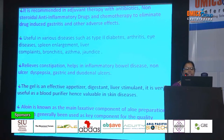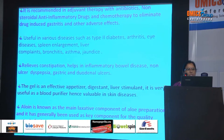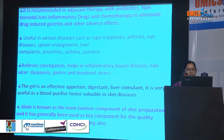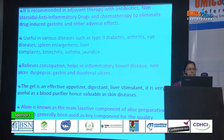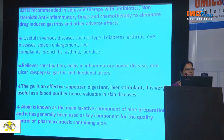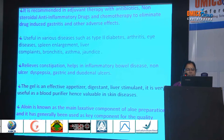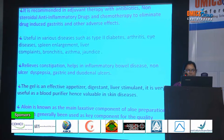Aloe is useful in various diseases such as type 2 diabetes, arthritis, iron deficiency diseases, spleen enlargement, liver complaints, bronchitis, asthma, and injuries. It also relieves constipation, helps in inflammatory bowel disease, non-ulcer dyspepsia, and gastric and duodenal ulcers. The gel is an effective appetizer, digestive, and liver stimulant, and is very useful as a blood purifier. Hence it is very valuable in skin diseases. Aloein is known as the main active component of aloe preparations and has generally been used as a key component for quality control of pharmaceuticals containing aloe.